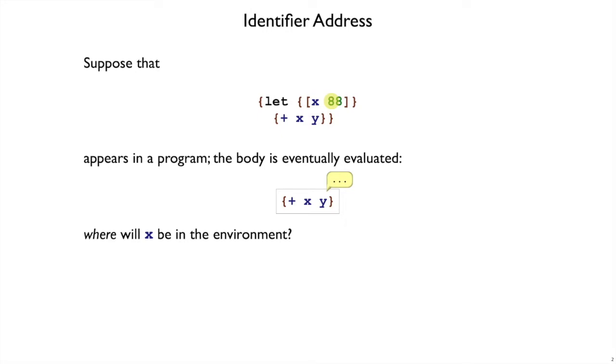There will be an extended environment with bind x 88 just before interpreting this body expression, so in fact x will be the first thing in the environment. We don't have to know anything about the surrounding program for this expression to know that x is going to be at the beginning.